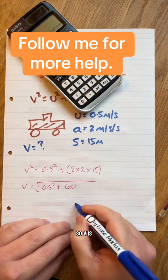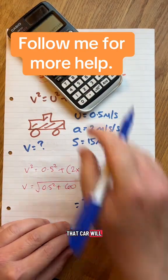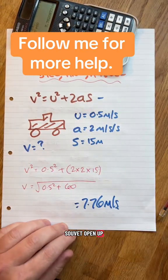7.76, I'll do it. So V is 7.76 meters per second. That car will be going at that speed after all of that. SUVAT, over and out.